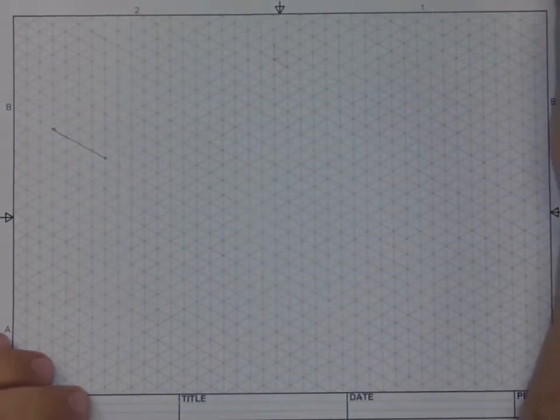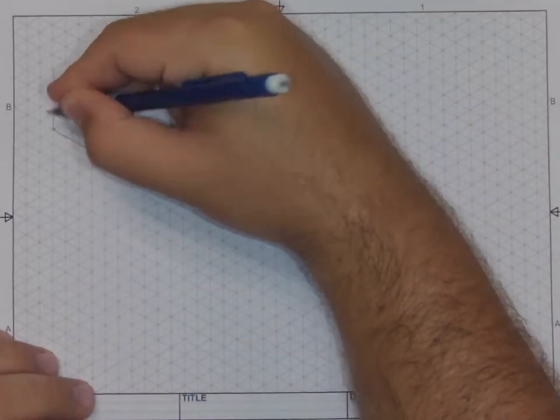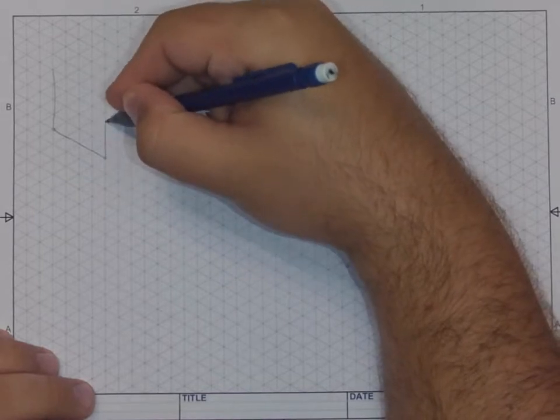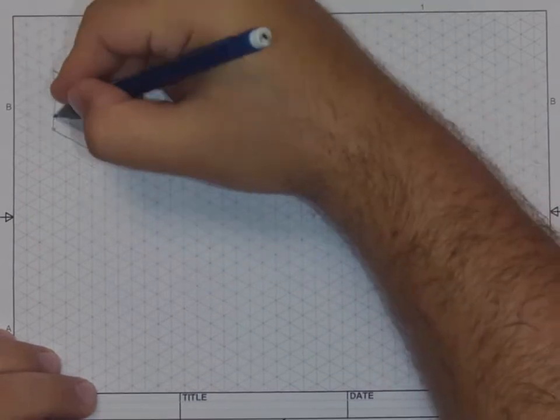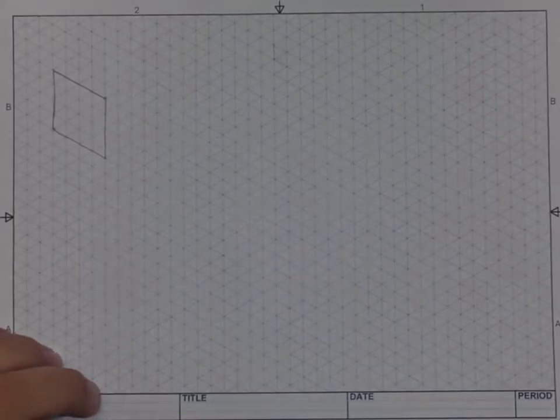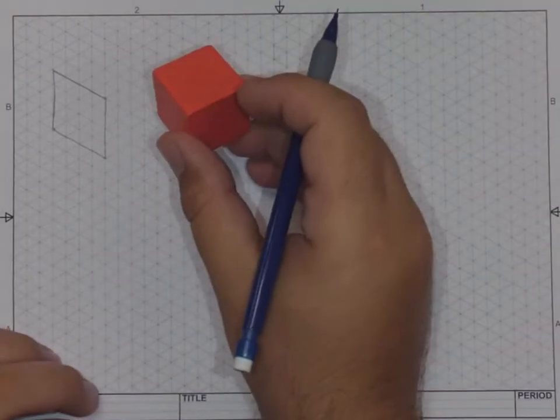Now I need to add some height to that front face: one, two, three, four. One, two, three, four. Then I can connect them. Here I just made that square, just like sketching on regular grid paper but the grid paper is turned at an angle.